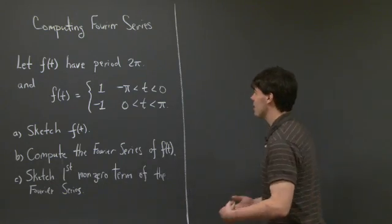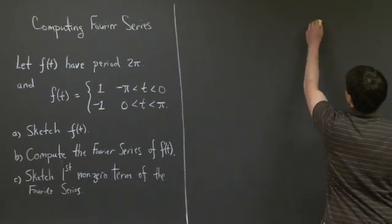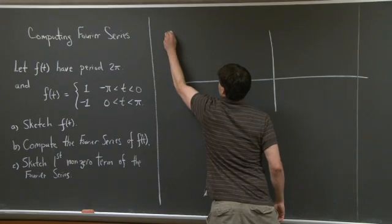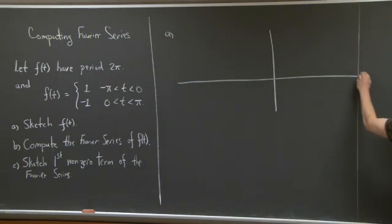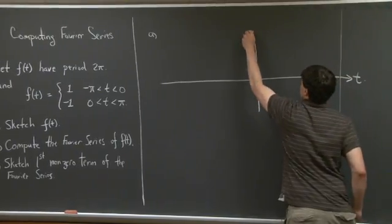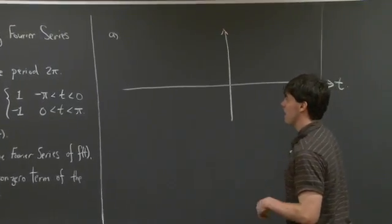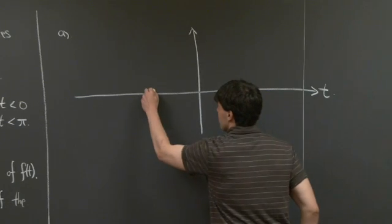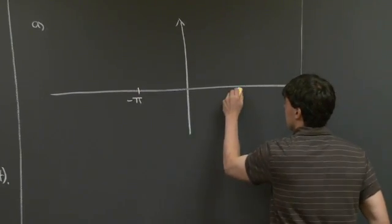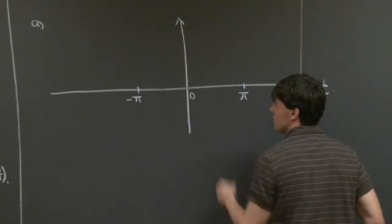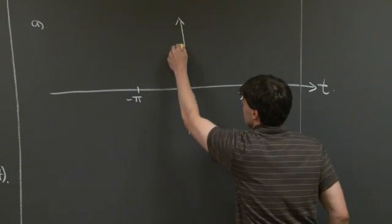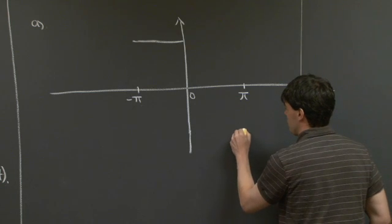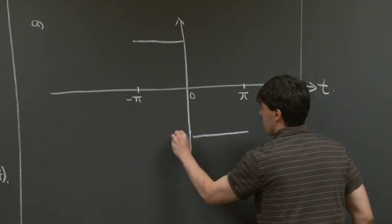Welcome back. Let's take a look at sketching f of t. For part a, we have our axes, t. We're told f of t within some interval, so we might as well plot f of t on that interval. So minus π, π and 0, we know that f of t is 1 from minus π to 0. We're also told that it's minus 1 from 0 to π.